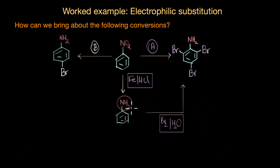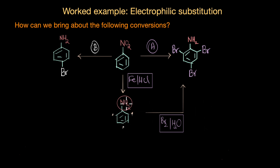Poly-bromination occurs because amines are highly reactive towards electrophilic aromatic substitution. The NH2 group has a lone pair of electrons that delocalizes with the pi electrons of the benzene ring — it is an activating, electron-donating group that increases electron density at the ortho and para positions. So with Br2 in water, substitution takes place at all ortho and para positions, giving a poly-substituted product.